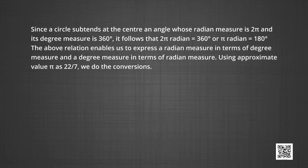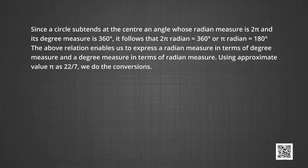Since a circle subtends at the centre an angle whose radian measure is 2π, and we know that its degree measure is 360 degrees, it follows that 2π radians is equal to 360 degrees, or π radians is equal to 180 degrees. This relation enables us to express a radian measure in terms of degree measure and also to convert degree measure in terms of radian measures. We are going to use the value of π as 22/7, which is an approximation, to do the conversions.